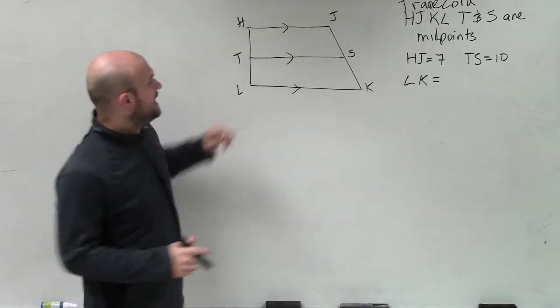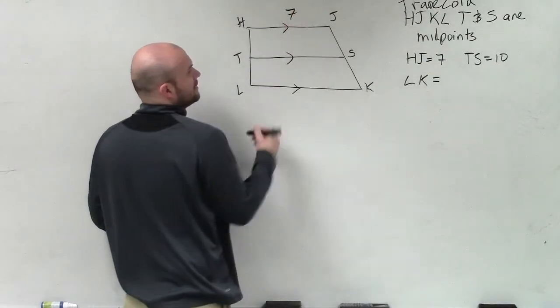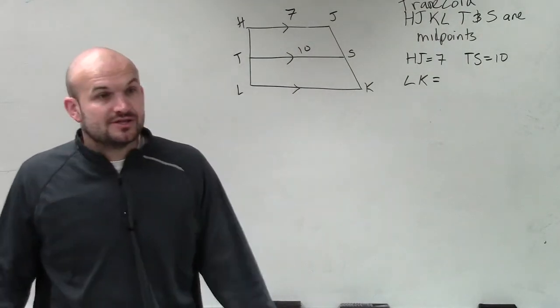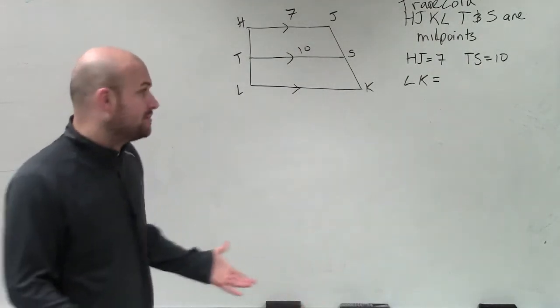All right, so they're saying that HJ is 7, and your mid-segment is 10. What is LK? Well, to do that, we need to go back through the mid-segment formula.